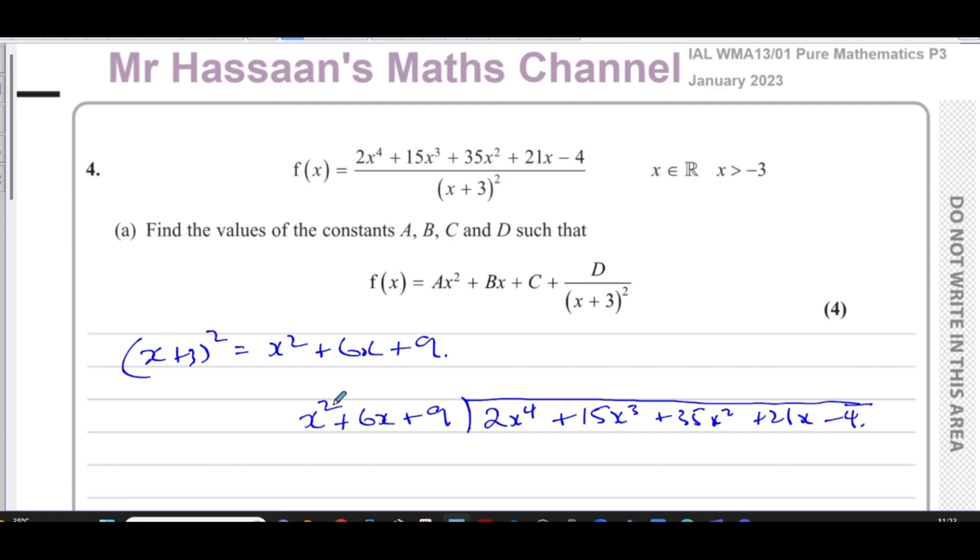First of all, x squared times something is 2x to the power 4, well that's 2x squared. Then I multiply the 2x squared with these three terms, so 2x squared times x squared is 2x to the power 4. Then 2x squared times 6x, 6 times 2 is 12, so that's plus 12x to the power 3. And 2x squared times 9, that's 18, so that's 18x squared.